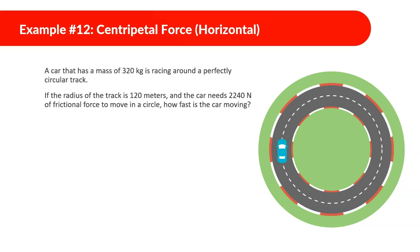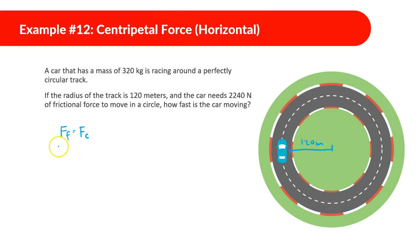A car with a mass of 320 kilograms is racing around a perfectly circular track. The radius is 120 meters and the car needs 2240 newtons of frictional force to move in a circle. How fast is the car moving? The force of friction is what allows it to go in a circle, so the force of friction equals the centripetal force. The force of friction is 2240 newtons.